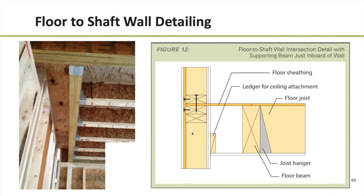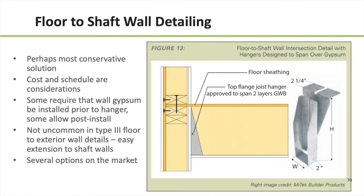That detail was achieved by running a beam parallel to the shaft wall about 16 inches off of it. All of the floor joists were hung from that beam, and then the floor sheathing extends from that beam into the shaft enclosure wall. Another option that some projects have used is proprietary hangers that allow spanning over one or two layers of gypsum wallboard, where both layers extend up between the wood stud wall and the end of the floor joists, and the hanger top flange bears on the top plates of the wall behind it.